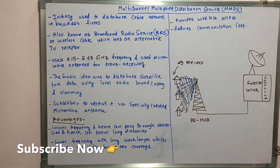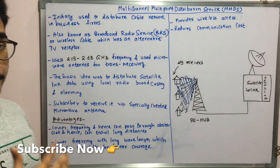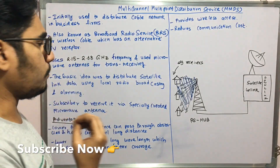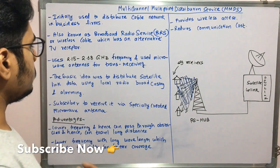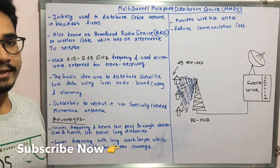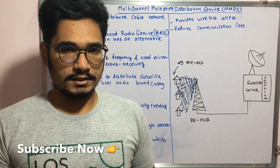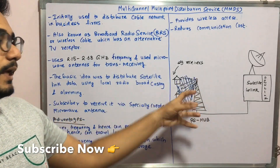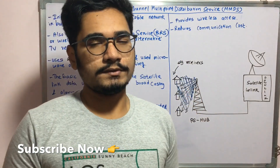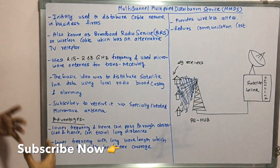MMDS operates using a frequency range of 2.15 to 2.68 GHz and is used with microwave antennas for transceiving. The broadcasting station uses microwaves and transmits them so they reach each of the signal receivers.